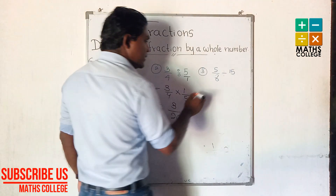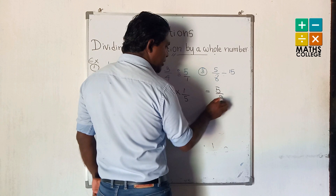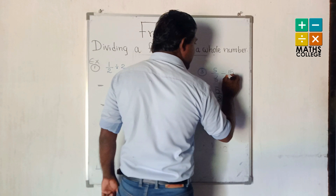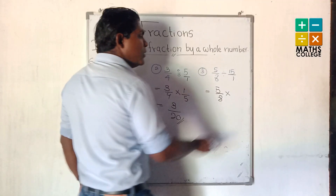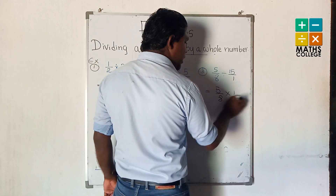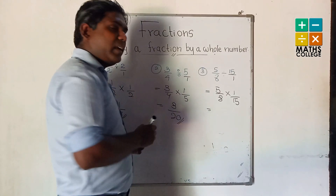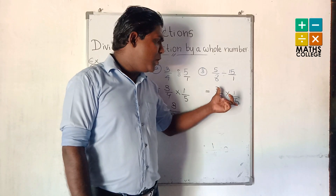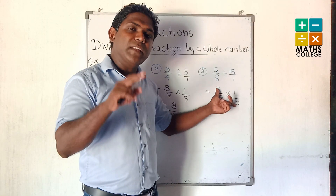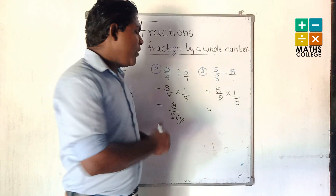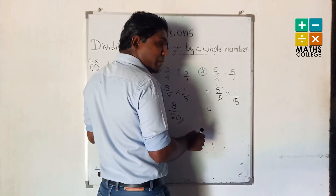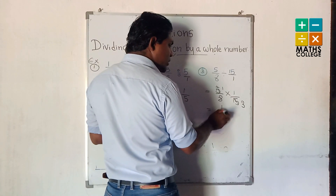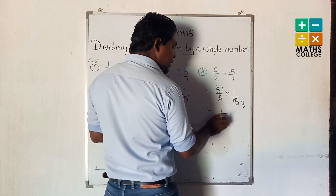Third example: 5 upon 8 not change. The division, change to multiply. Here: 15 upon 1 — change as reciprocal: 1 upon 15. You can see numerator and denominator have a common factor: 5. When divide by 5: 5 divided by 5 is 1 times, and 15 divided by 5 is 3 times. So: 1 multiply 1 is 1, and 8 multiply 3 is 24. Answer: 1 upon 24.